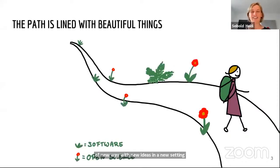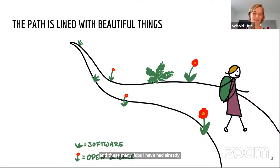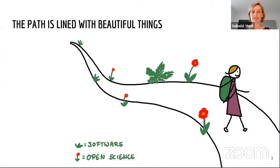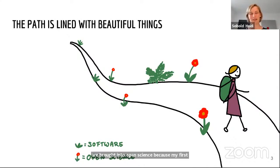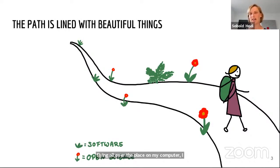Through all these many jobs in my short career, one or two things were always with me along the way — software and open science. I already started using R during my bachelor's. I got into open science because my first real research project during my master's turned out to be such a big mess. I had files flying all over the place on my computer and thought, I need to do this better, I need to become a better researcher. That's how I got really into reproducible research, and through that path I learned about the whole open science movement and the community behind it.